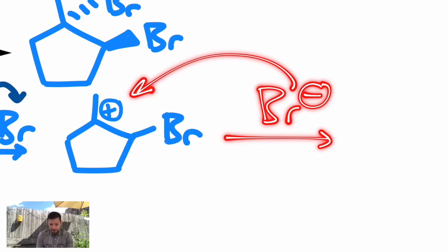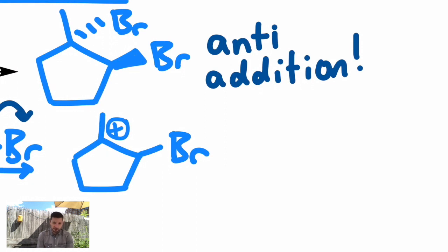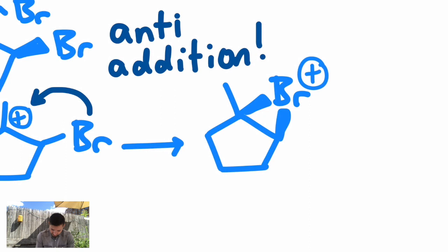You might say the other bromine sees this and forms a bond, but that doesn't explain the observation of anti-addition. The reason is we've observed a bromonium ion intermediate, where this positive charge actually forms a bond with the lone pairs on the bromine. Draw an arrow from the bromine to the plus charge. You get a three-membered ring with a bromine, called a bromonium ion.